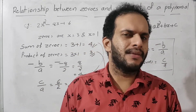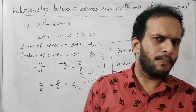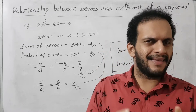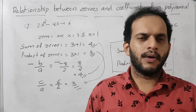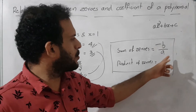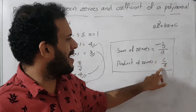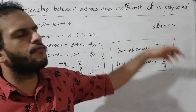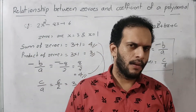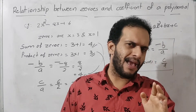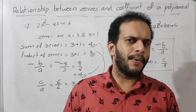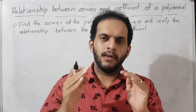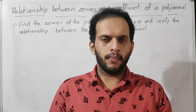This is the relationship between the zeros and coefficients of a polynomial. Sum of zeros equals minus B by A, where B is the coefficient of x and A is the coefficient of x². Product of zeros equals C by A, where C is the constant and A is the coefficient of x².